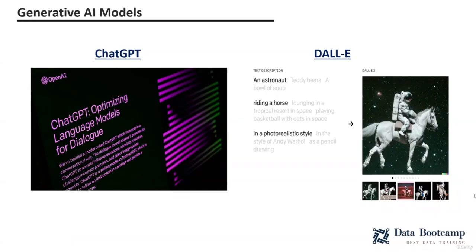Two of the most well-known Generative AI models to date are ChatGPT and DALL-E. ChatGPT is a chatbot that uses Generative AI to produce human-like responses when a user asks a question or gives it a task. It was developed using the GPT-3 language model and has gained significant attention for its ability to generate impressive and sometimes very human-like responses — it can even incorporate a humorous tone. On the other hand, DALL-E is an image generation system that can produce original images based on text prompts. It has been used to create over 2 million images per day with over 1.5 million users. Both models were developed by OpenAI.